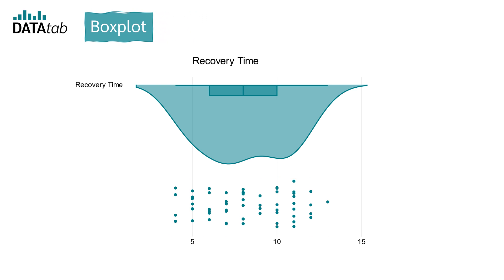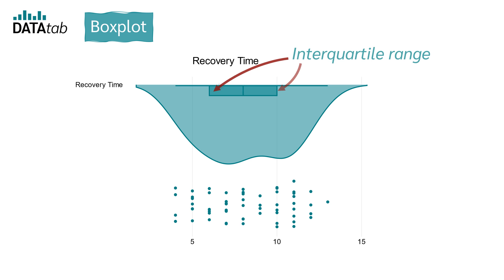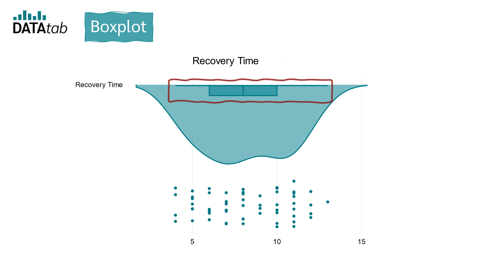The third component is the box plot. Often there is a traditional box plot showing the median and interquartile range. This provides summary statistics about the data's central tendency, spread, and potential outliers.